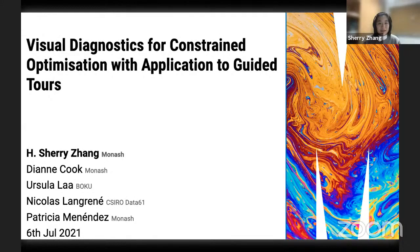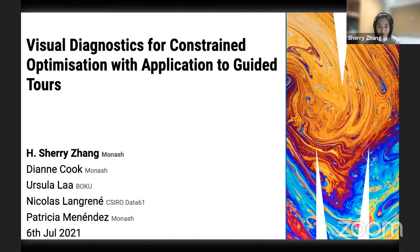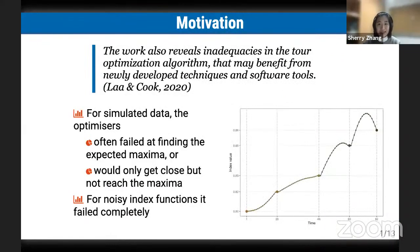My name is Sherry Jiang. I'm a PhD student from Monash University in Australia. Today I will be talking about Visual Diagnostics for Constraint Optimization with Application to Guided Tours. This work is supervised by Diane, Patricia, Nicholas, and Echelon. The project is motivated by Echelon and Dai's work applying guided tours to physics problems. Their paper reviews inadequacies in the tour algorithm optimization that may benefit from newly developed techniques and software tools.